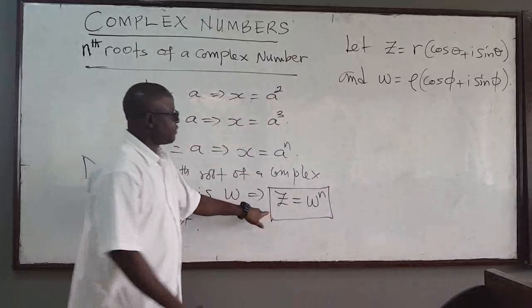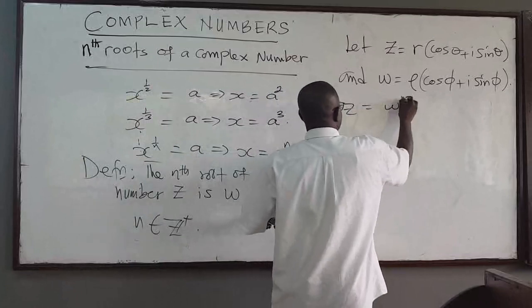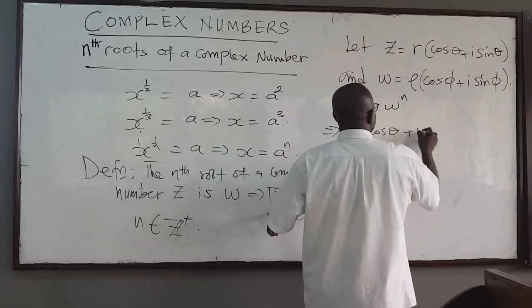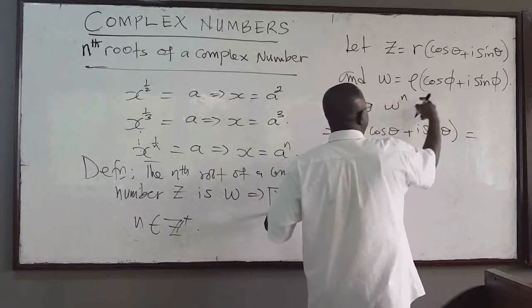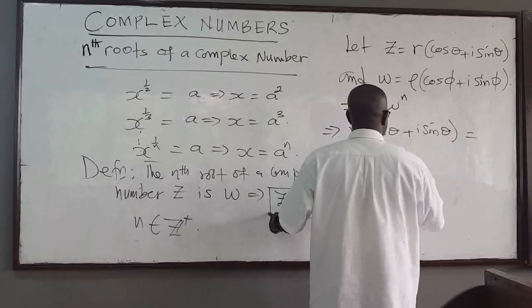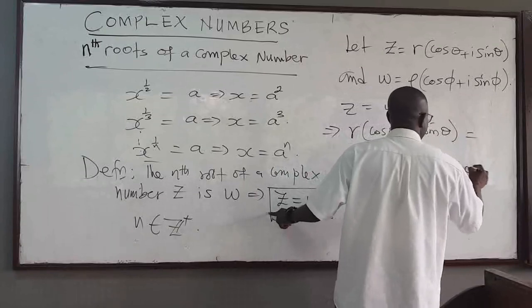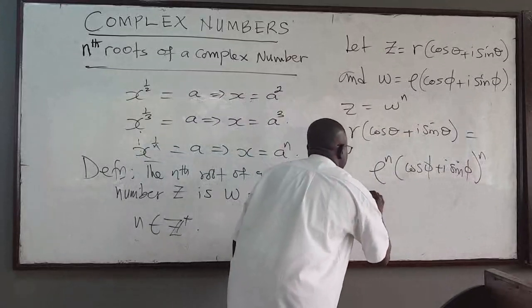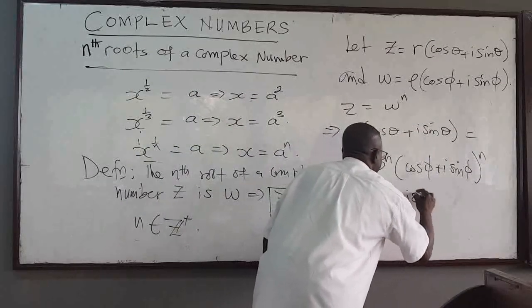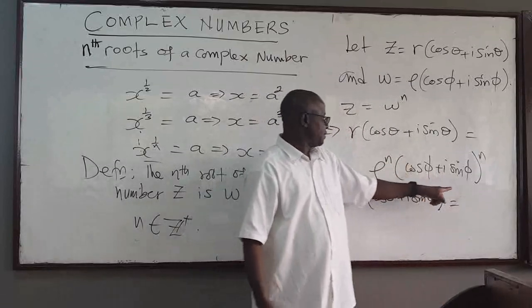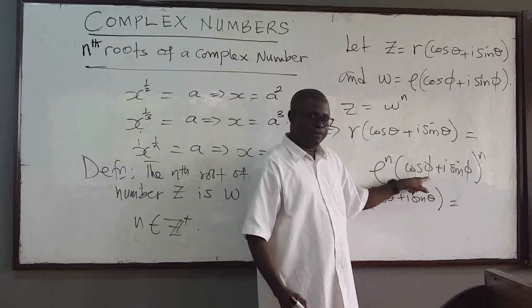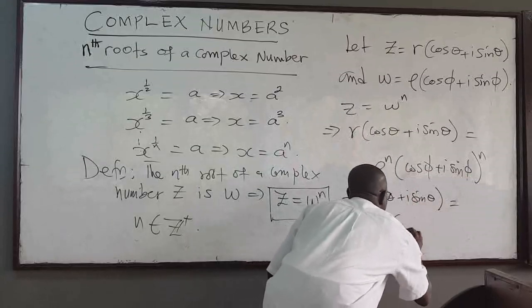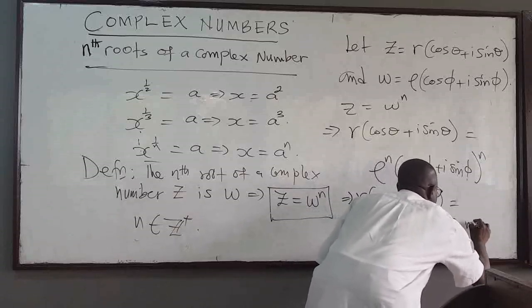From the relation z = w^n, this implies that r times cosine of theta plus i sine of theta has to equal w to the power n, which is rho to the n times cosine of phi plus i sine of phi, all raised to the power n. Applying De Moivre's theorem, this becomes rho to the n times cosine of n·phi plus i sine of n·phi.